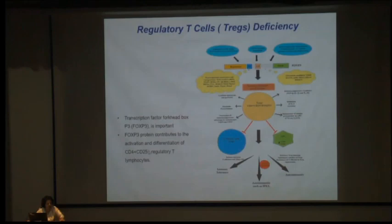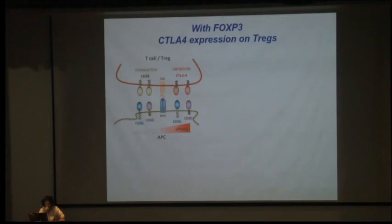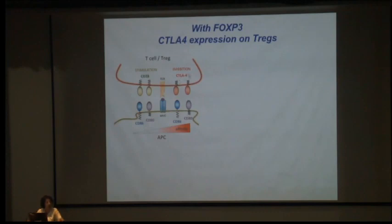T-regs are CD25+FOXP3+ and FOXP3 provides their activation. T cells generally have CD28-mediated stimulation and also inhibitory signals. T-regs are more potent when CTLA-4 — an inhibitory molecule — is more highly expressed on them. The greater the CTLA-4 affinity on T-regs, the more potent they are.